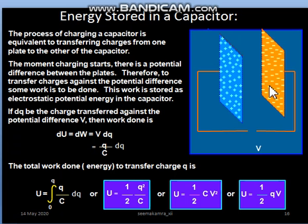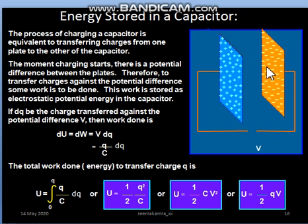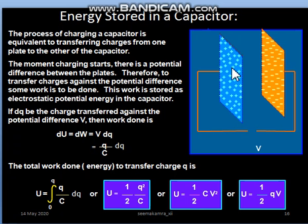Suppose we have a parallel plate capacitor and initially it is uncharged. To charge it, we connect it through a battery of voltage V. In the process of charging, initially some charges will develop and the charge continuously increases. As soon as we start charging, opposite charges develop on the two plates, creating a voltage difference between them. To supply more charge, that charge has to overcome this voltage difference, and some work must be done on that charge — this work is stored in the capacitor as its energy.